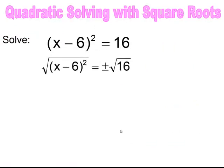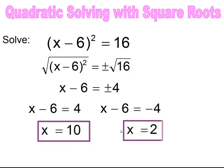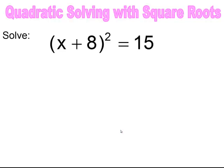In this practice problem, when you square root both sides, 16 is a perfect square and you end up getting plus 4 and minus 4. So now you can solve for x, setting x minus 6 equal to positive 4 and negative 4. You get x equals positive 10 and x equals positive 2.